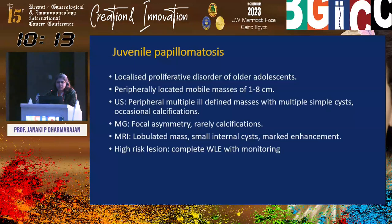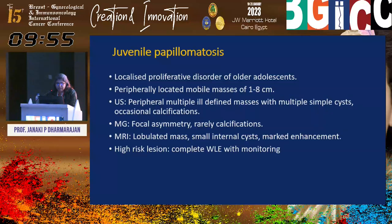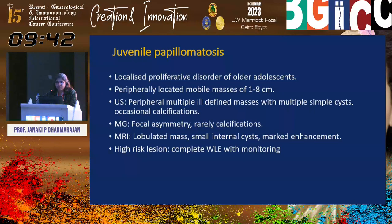Juvenile papillomatosis is a localized proliferative disorder of older adolescents, presenting as peripherally located mobile masses of 1 to 8 centimeters. Ultrasound shows multiple ill-defined masses with multiple cysts and occasional calcifications. Mammography presents as focal asymmetry with rare calcifications; MRI shows a lobulated mass with small internal cysts and marked enhancement. This is a high-risk lesion requiring complete wide local excision with monitoring. Since this was a young girl, we are following her closely with the plan to complete excision after she completes her family.